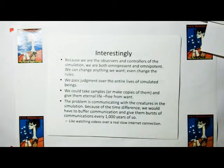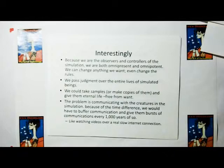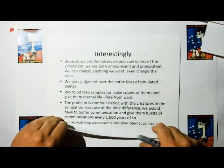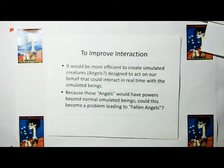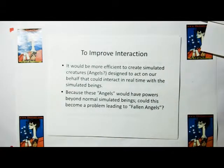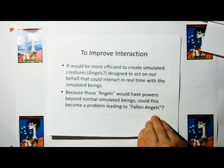But we have a problem, because in order to keep the simulation on track to get to an end game without going down any of the blind infinite alleys that we could possibly go down, we have to communicate with the simulation. Because of the time difference, we would have to buffer communication and give bursts of communication every thousand years or so. It's like watching videos over a slow internet connection. So to improve the interaction, it would be more efficient to create simulated beings that would interact within the speed of the simulation. We could call them liaisons, call them angels, call them whatever you want.